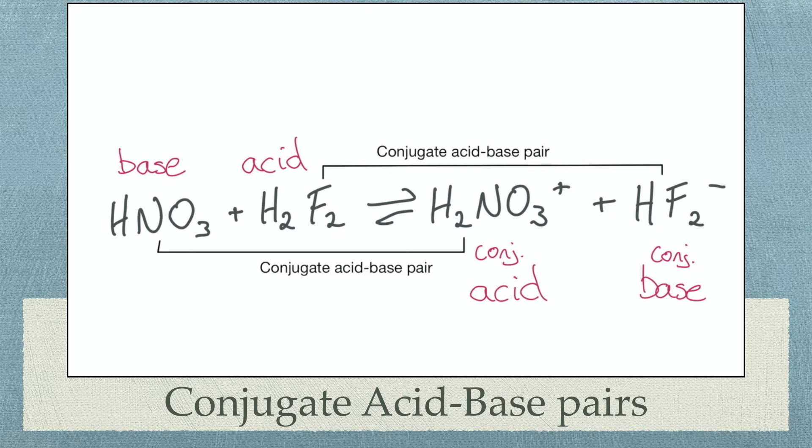Now we write out the products. We know nitric acid is the acid. So it must donate a proton. And H2F2 will accept that proton. Step 3. Identify the conjugate acid and the conjugate base. They are the opposites of the reactants.